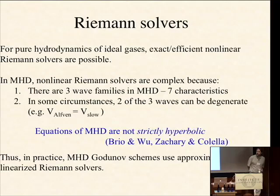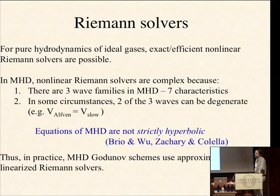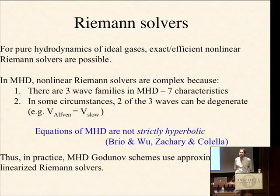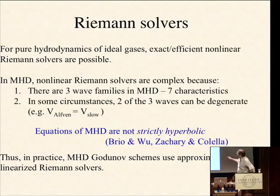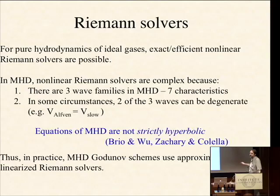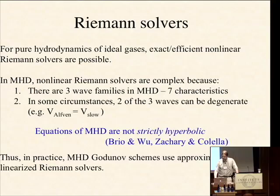You can develop exact and fairly efficient nonlinear Riemann solvers for ideal gases in pure hydrodynamics. For MHD it's much more difficult — there are three wave families, giving seven characteristics and six possible intermediate states. In some circumstances, two of the three wave families can be degenerate, so there aren't always six independent intermediate states. Mathematically, the equations of MHD are not strictly hyperbolic — they don't always have linearly independent eigenvalues. In practice, MHD Godunov schemes use approximate or linearized Riemann solvers instead of exact nonlinear solvers, which are too expensive.